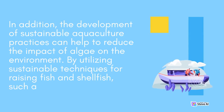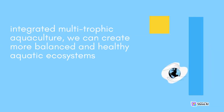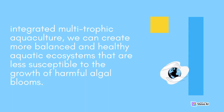The development of sustainable aquaculture practices can help to reduce the impact of algae on the environment. By utilizing sustainable techniques for raising fish and shellfish, such as integrated multi-trophic aquaculture, we can create more balanced and healthy aquatic ecosystems that are less susceptible to the growth of harmful algal blooms.